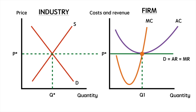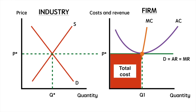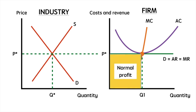The firm's total cost at this point is equal to its average cost times output, which is P star times Q1. We determine average cost at this level of output by following the profit maximizing quantity up to the average cost curve and across to the y-axis. The firm's total revenue is equal to its average revenue times output, or P star times Q1. Total cost and total revenue are equal at this price and output, so the firm earns zero economic profit, also called normal profit. This means total revenue covers implicit and explicit costs. Since price equals marginal cost of production, perfectly competitive firms exhibit allocative efficiency. Also, they produce at the lowest point of the average cost curve, making them productively efficient.